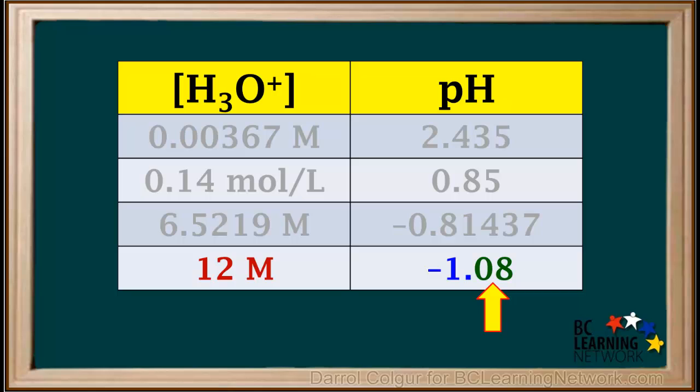The 0 and the 8 are the two significant figures in this pH. Again, the high hydronium ion concentration gives rise to a negative value for pH.